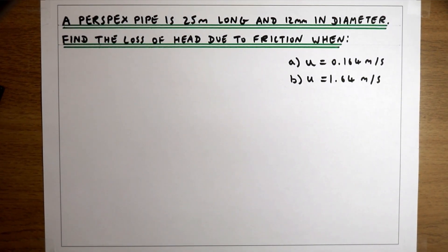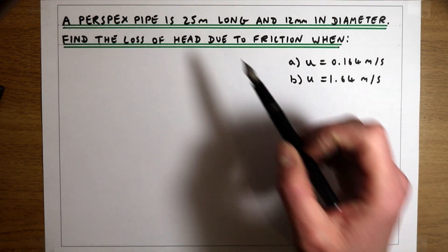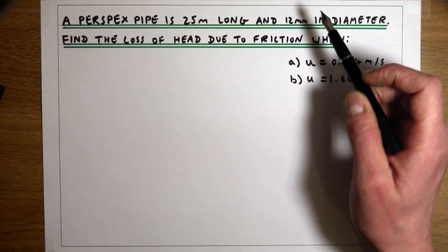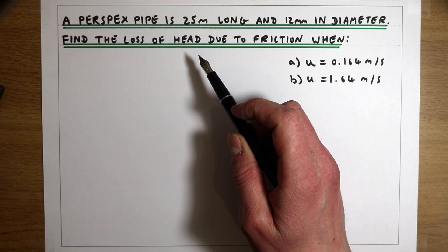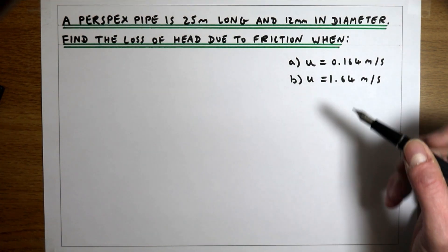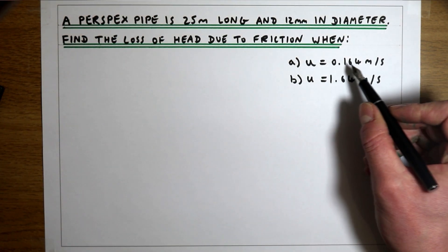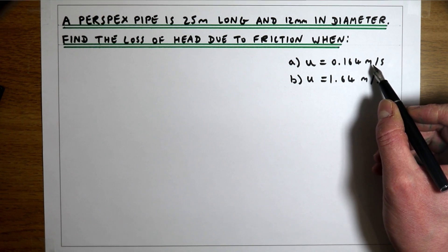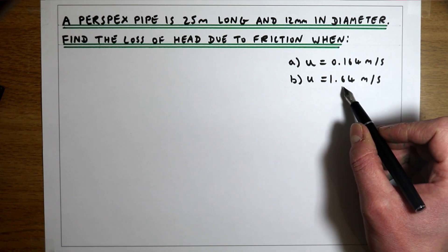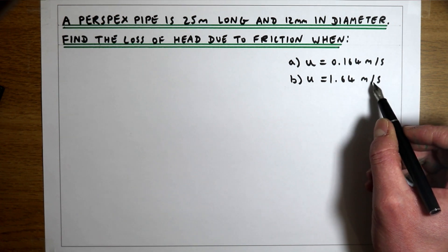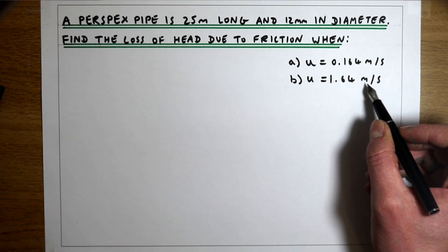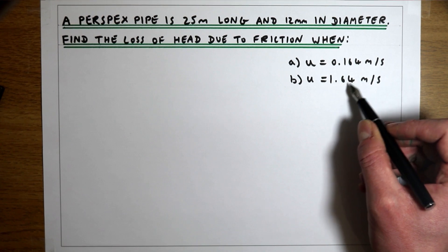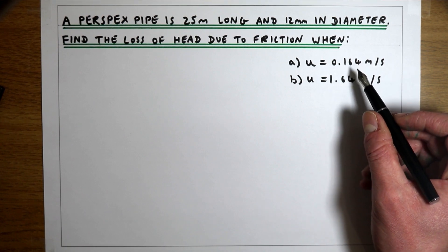In this example we've got a perspex pipe that's 25 metres long and 12 millimetres in diameter. We're trying to find the loss of head due to friction when the mean velocity is 0.164 metres per second, and then again when the mean velocity increases to 1.64 metres per second — so the second velocity is 10 times larger than the first.